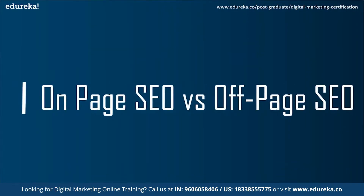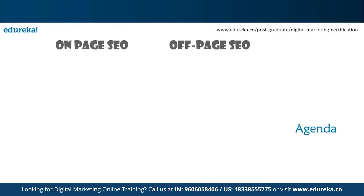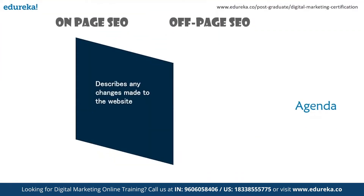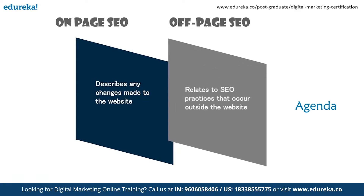The main agenda of on-page SEO describes the changes that can be made to your website — this includes the copy, page title, meta description, header tags, and HTML code. Whereas off-page SEO's agenda relates to any SEO practices that occur outside your website, including link building, social media marketing, and influencer marketing.